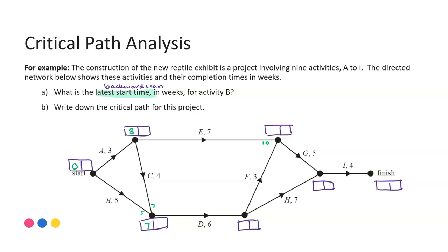7 plus 6 for D would be 13. And so activity F: 13 plus 3 gives me 16. The largest value moving forward - G can commence when both are done, giving me 16. For G: 16 plus 5 = 21. Considering H coming in here: 13 plus 7 = 20 for activity H. 21 is the largest value, and so I can commence. 21 plus 4 gives me 25 weeks at my finish point.